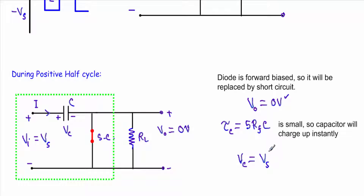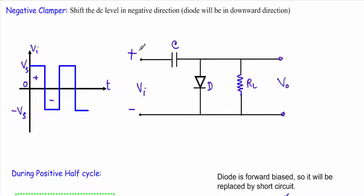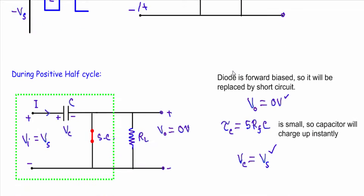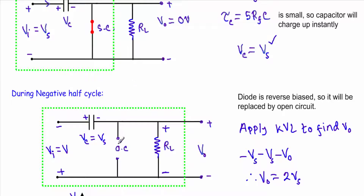In the negative half cycle, this terminal will be negative and this terminal will be positive. The positive terminal is connected with the n-side and the negative terminal is connected with the p-side, therefore this diode will be reverse biased. So I can replace this diode with an open circuit. When the diode gets opened, I can assume that branch does not exist in our circuit, and I will remove this branch from our network. During the negative half cycle, I am taking the output across the load resistor and this side is positive and this side is negative.